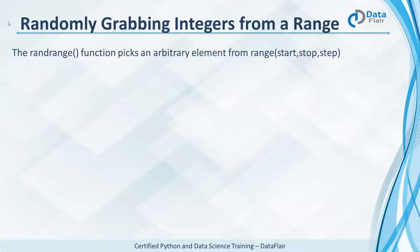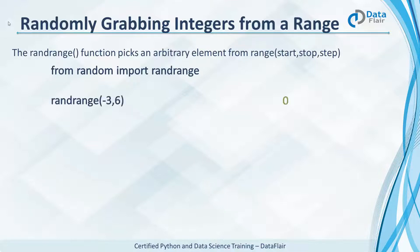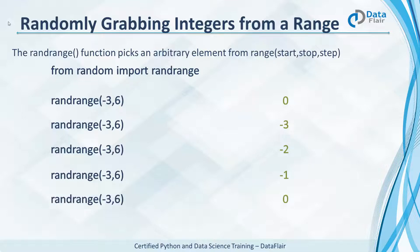Randrange solves this problem and returns a random integer from a range. You can provide a start, a stop, and a step for this. Randrange is also useful when you only have one value to provide, not two. For the range minus 3 to 6, it gives us 0, then minus 3, then minus 2, then minus 1, then 0, then 5, and so on. It will never return 6.